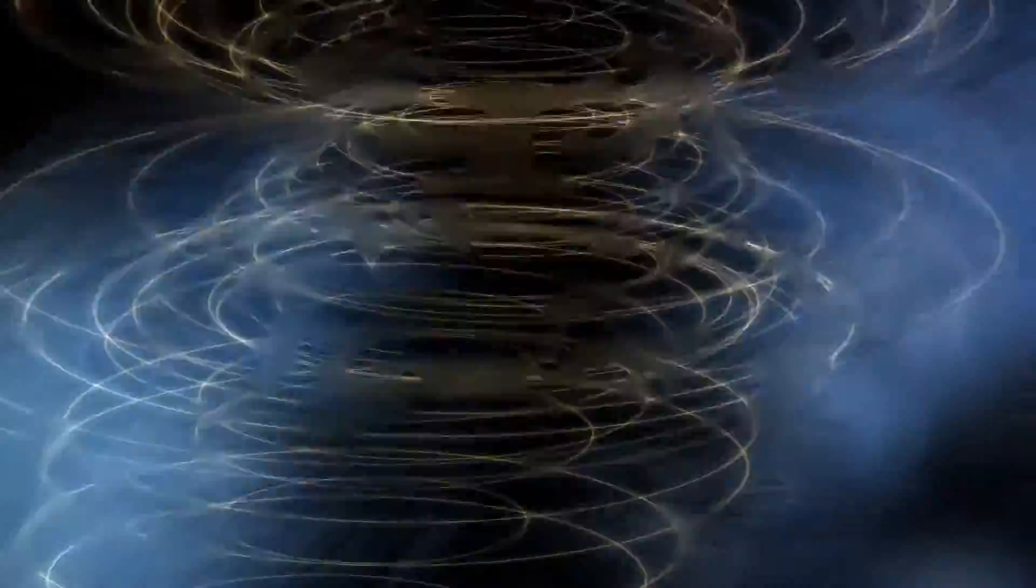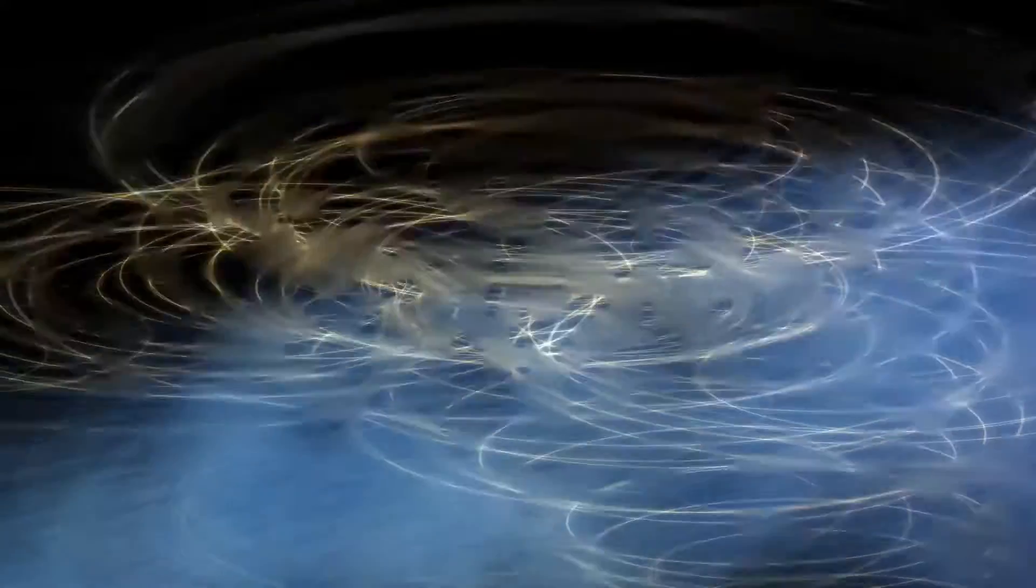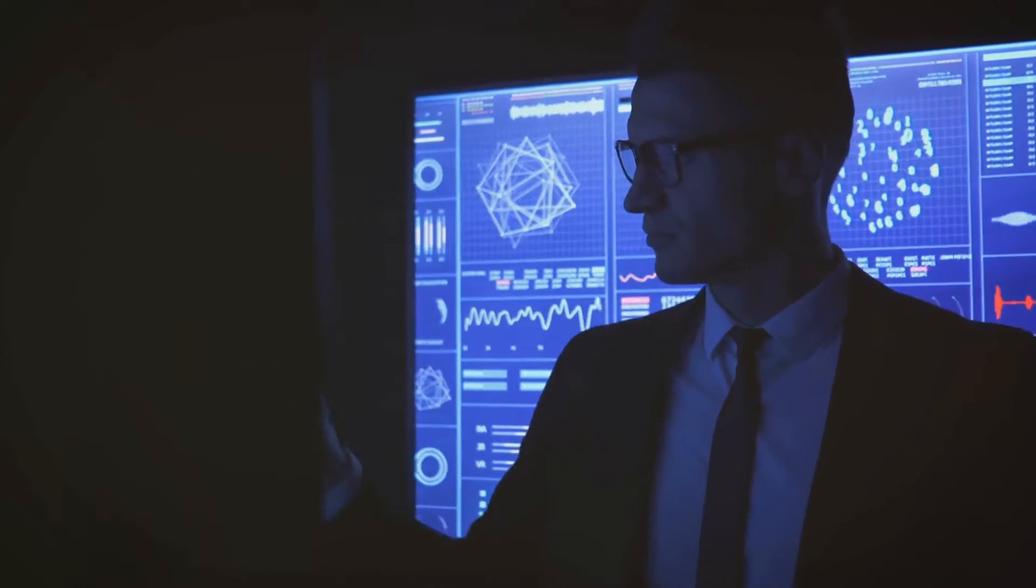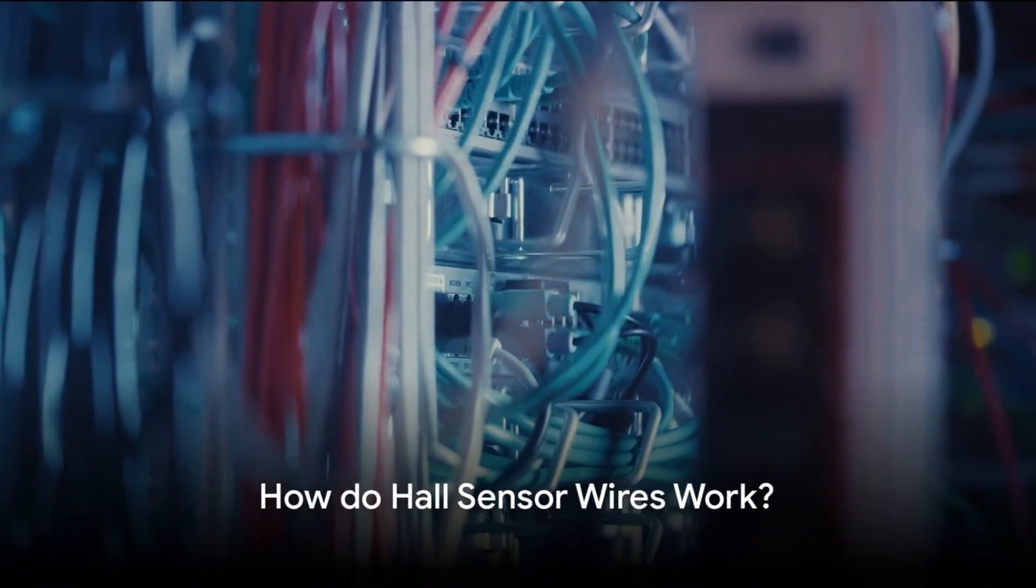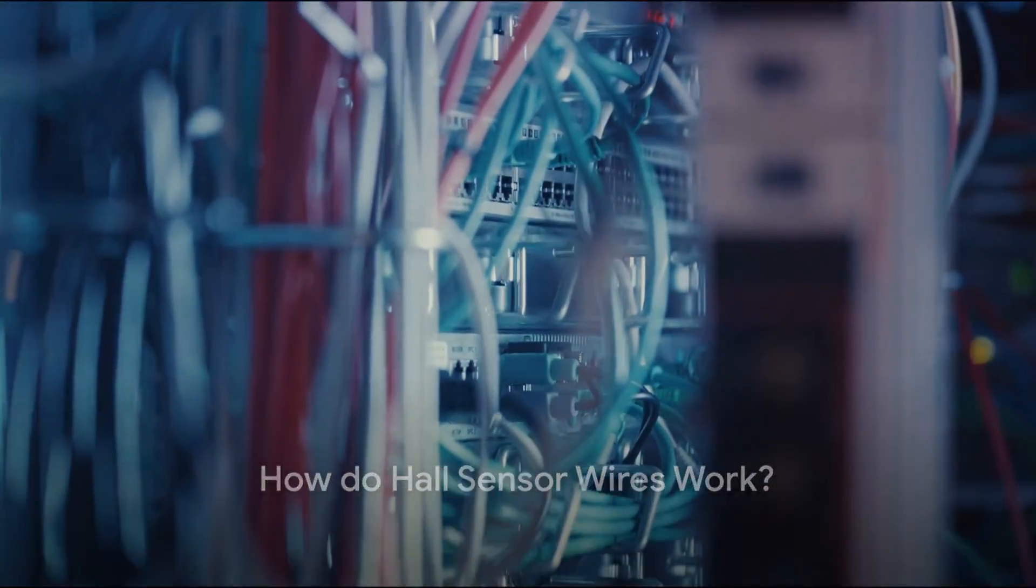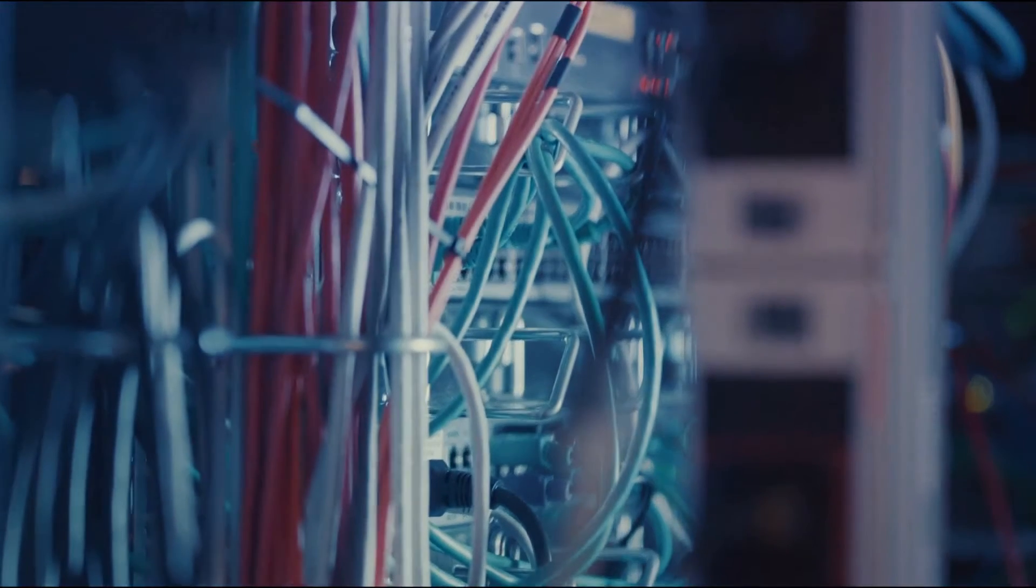In essence, they play a crucial role in sensing and translating magnetic fields into understandable electronic signals. These tiny wires have a massive role in our day-to-day life. Now you might be wondering, how do these Hall sensor wires actually work? Let's get into it.